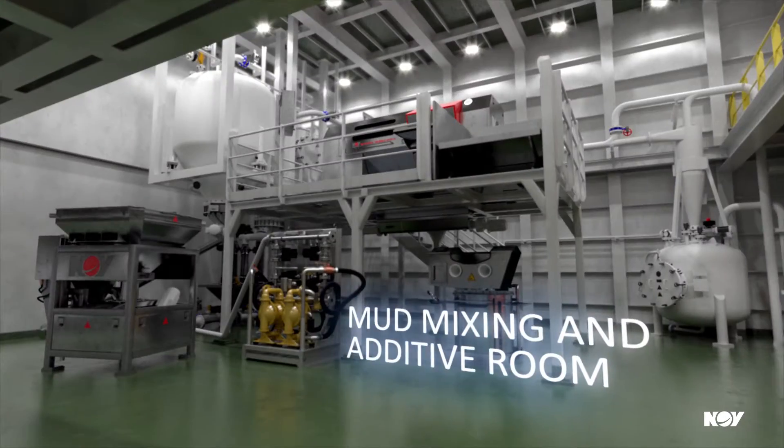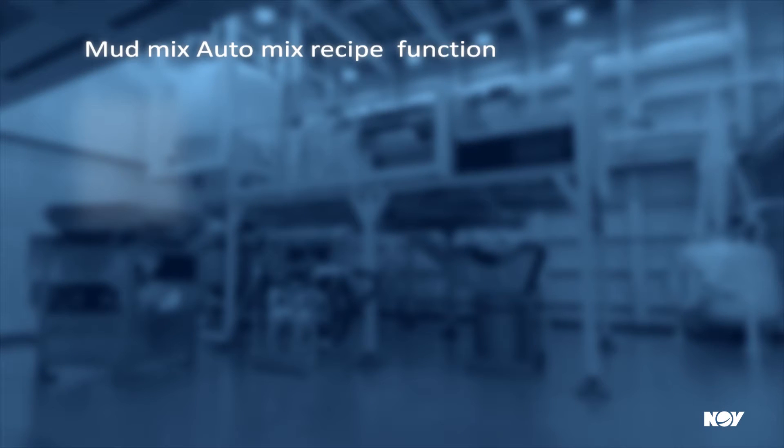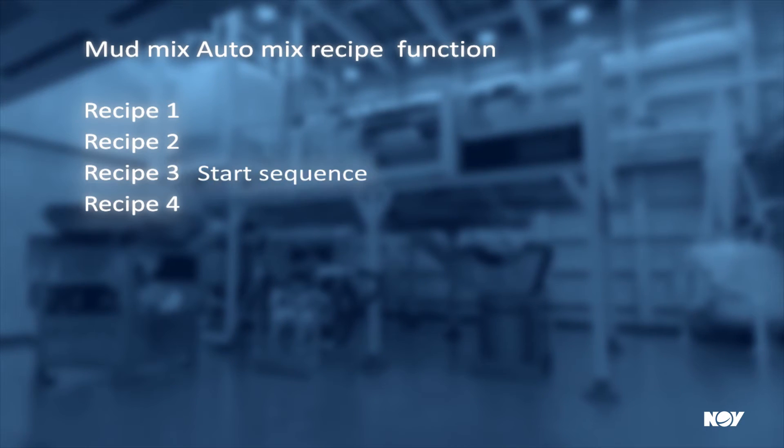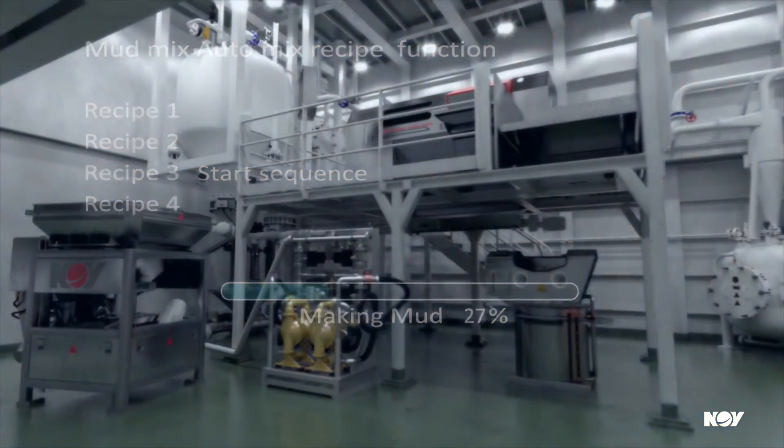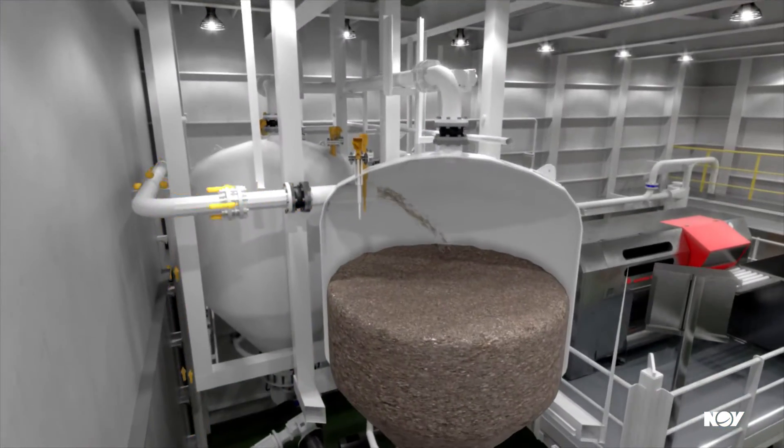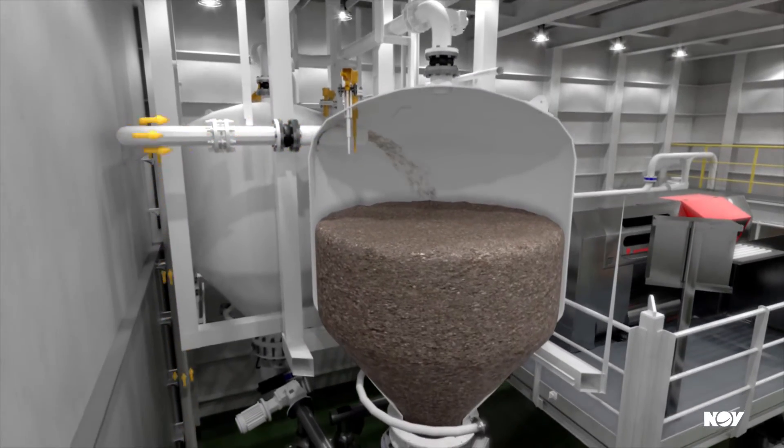In the sack store there is different equipment for adding chemicals to ensure proper mud qualities. Auto recipe is one of many auto functions which help the operator when preparing mud. The surge tank is automatically filled with powder from the storage tank.